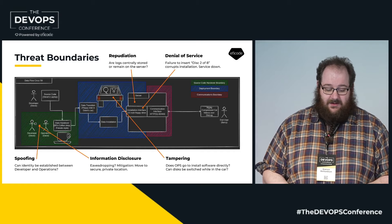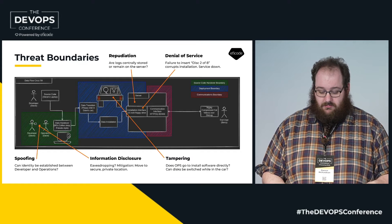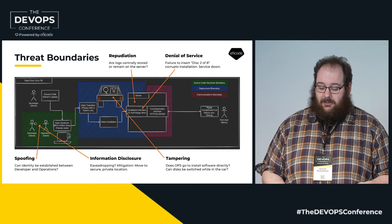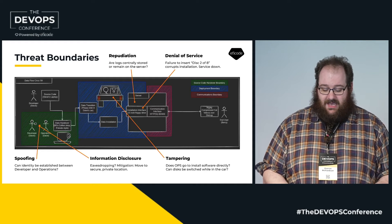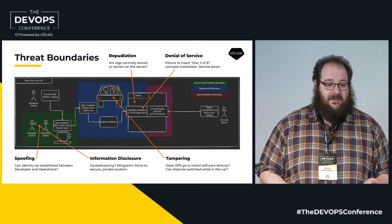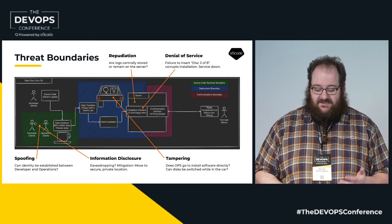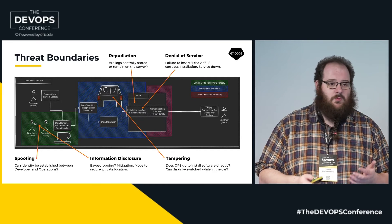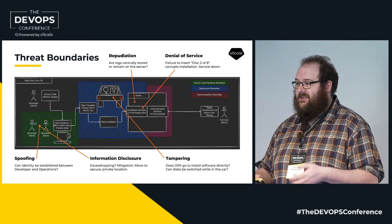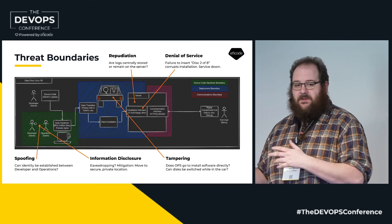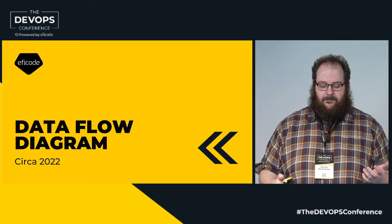And then simply we apply the threat model. Spoofing: can the identity of the developer and the operations guy be established? Information disclosure: is someone listening? Tampering: can someone take the floppy disk out of the car? It's quite simple.